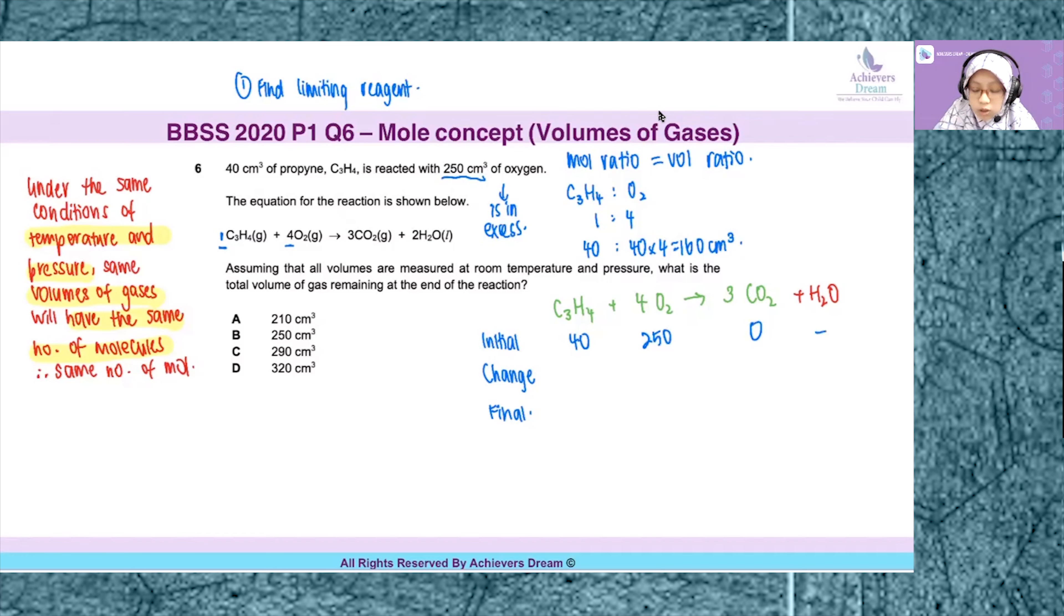Water you just ignore because it is in liquid state. If it is in gaseous state, if the equation shows it is in gaseous state, then you have to account for that steam, that gaseous water molecule.